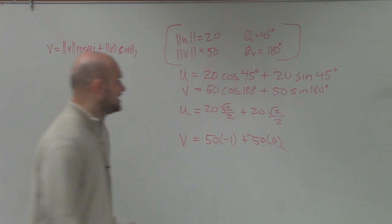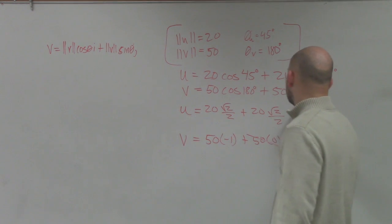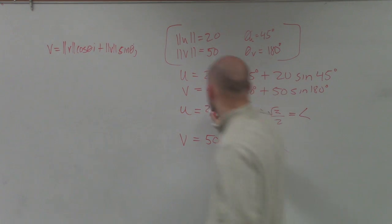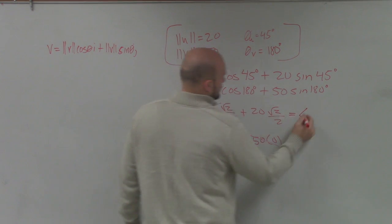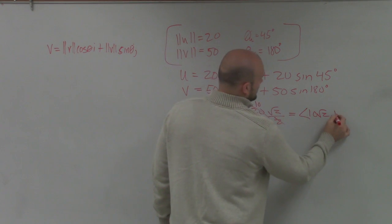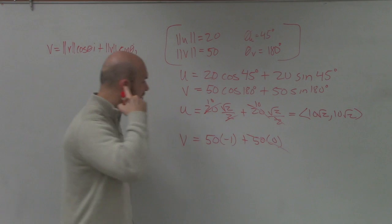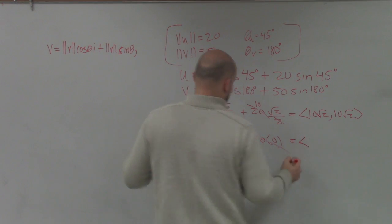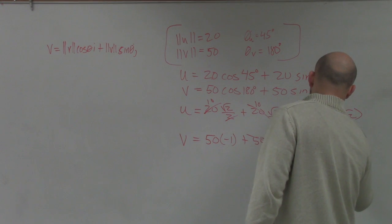So I'm going to write these in vector form, or in component form for us. Component form of this is going to be 10 square root of 2, comma, 10 square root of 2. If I write this in vector form, negative 50, 0.